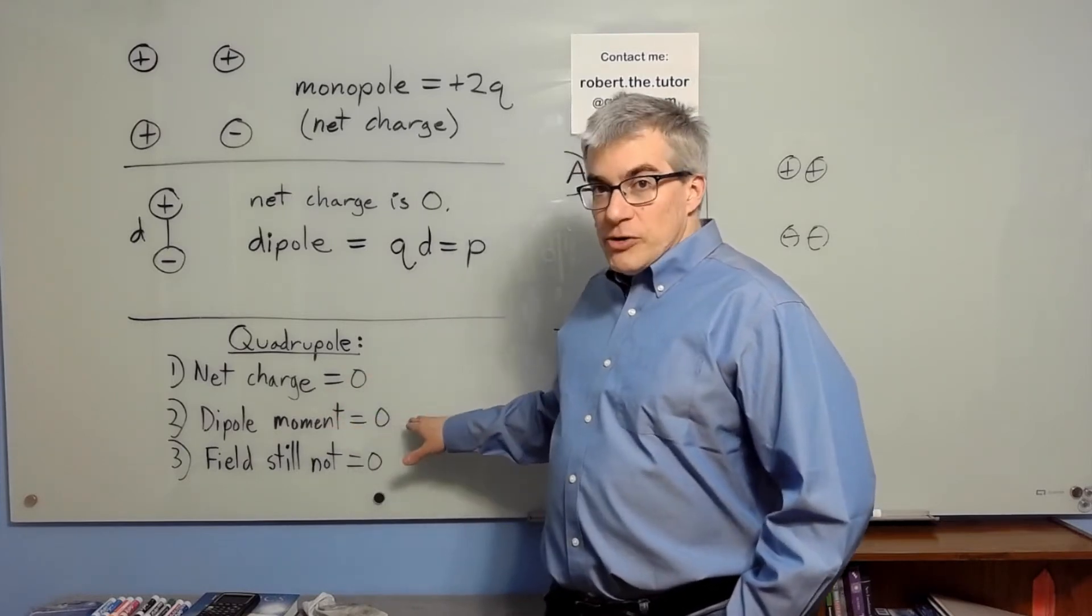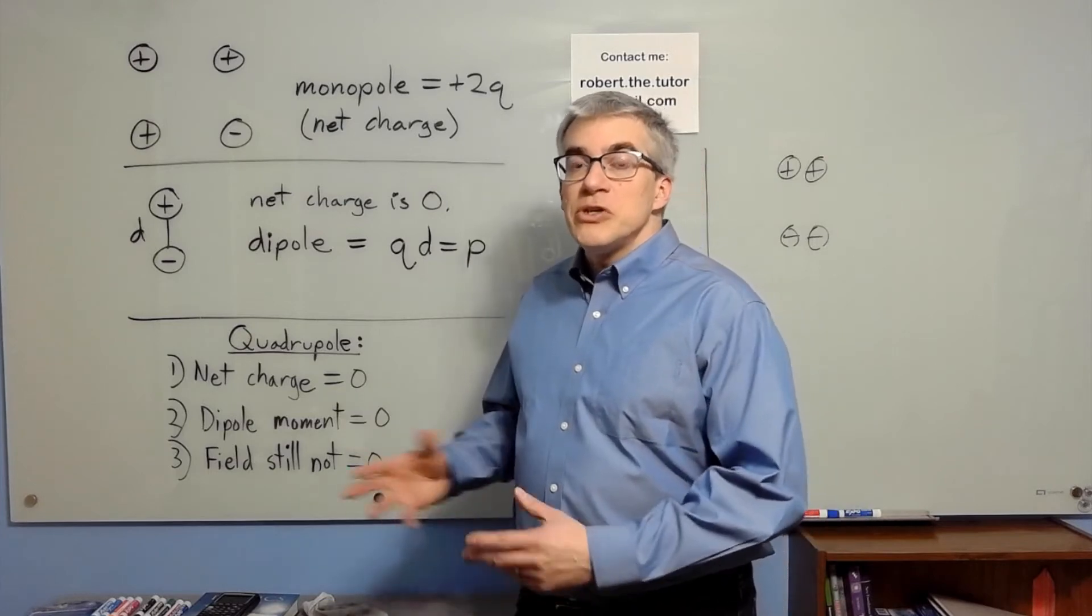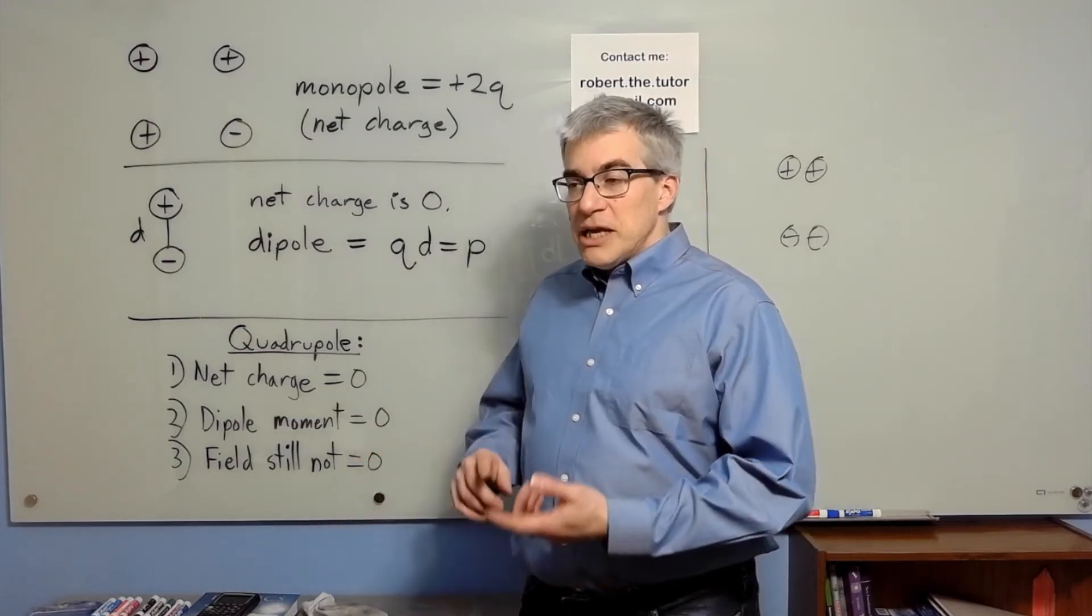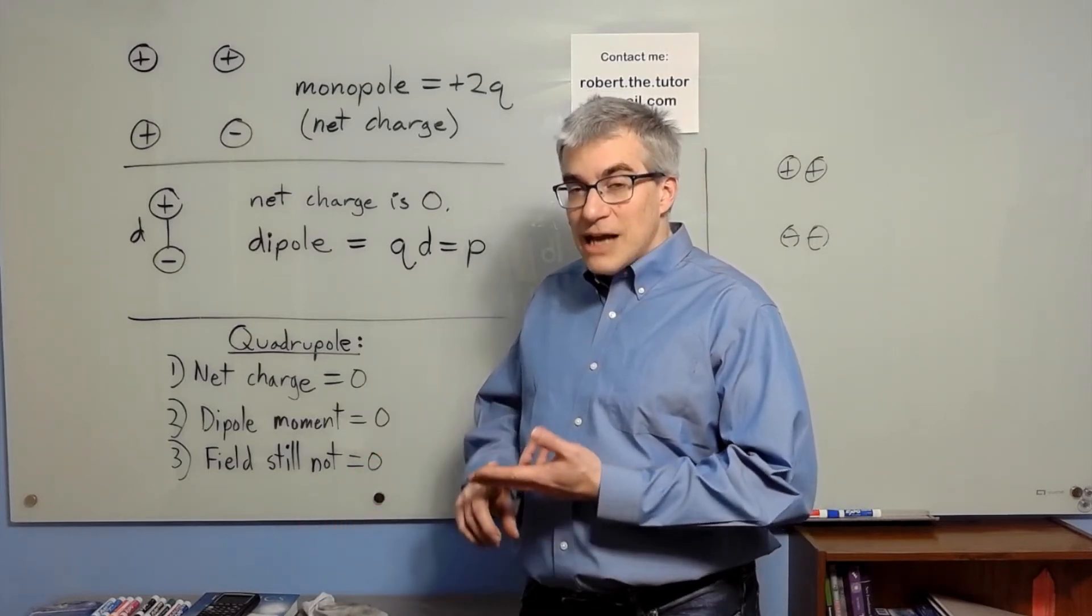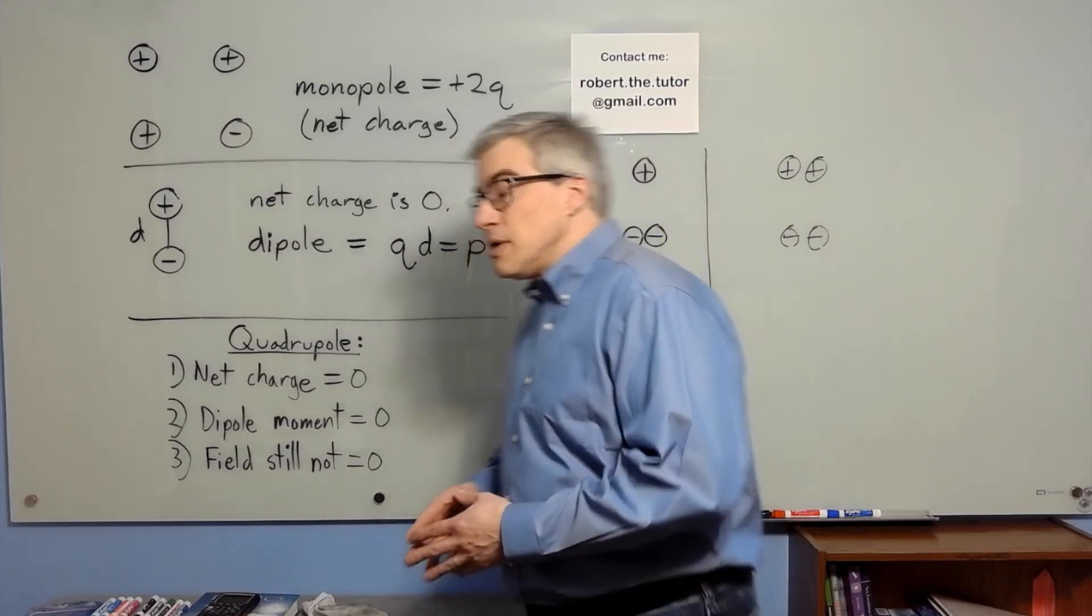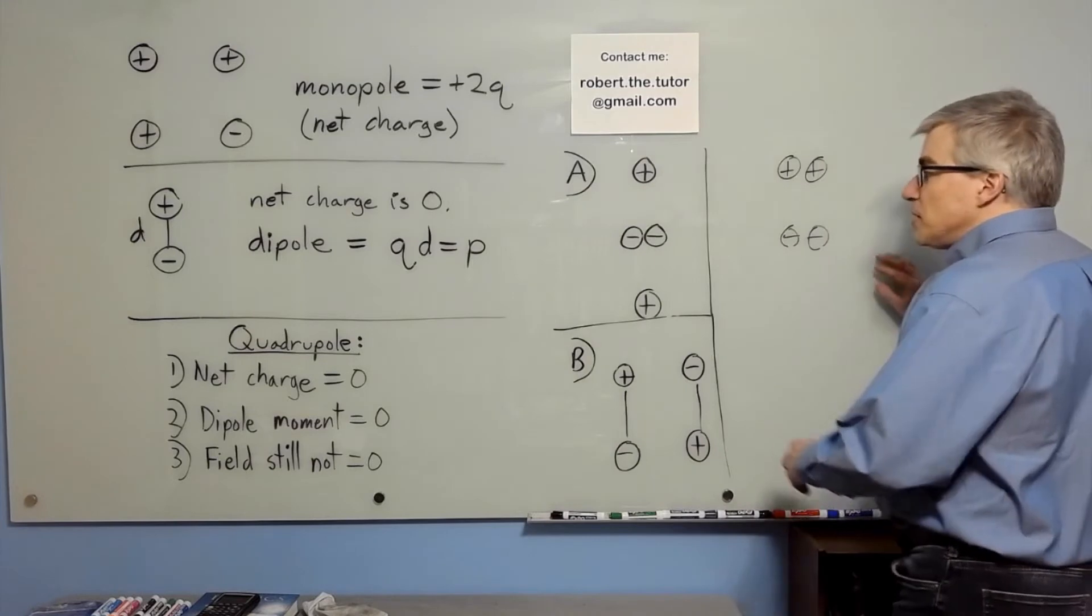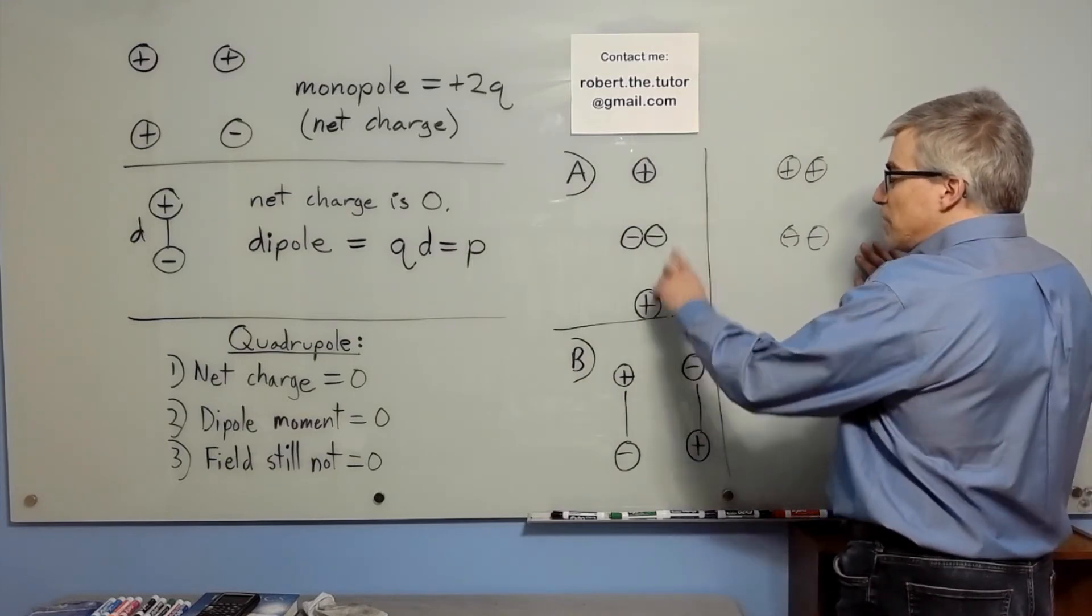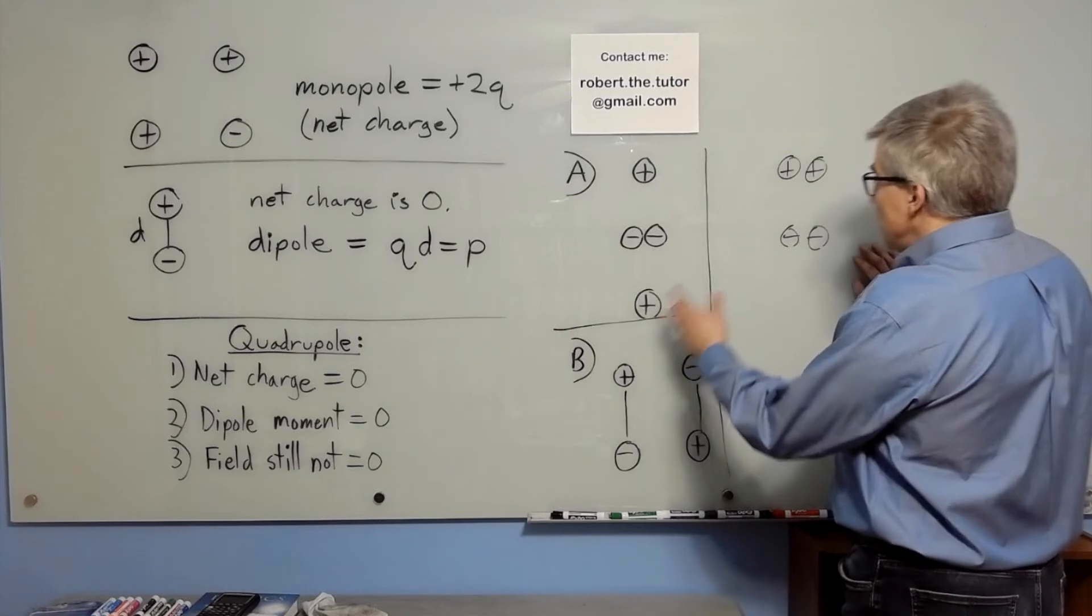But we still want the field to not be zero. So how do we cancel out the charge and cancel out the dipole moment but not completely cancel out the field? There are a few ways to arrange it. The simplest way is to have two dipoles right next to each other.